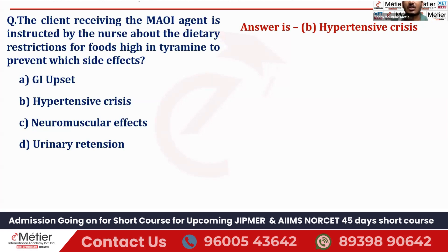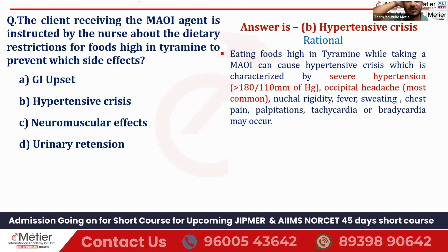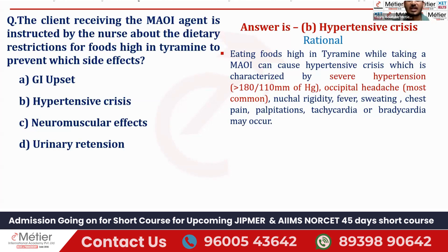The same thing is mentioned in the rationale. Eating food high in tyramine while taking MAOI can cause hypertensive crisis, which is characterized by severe hypertension — more than 180/110 mmHg. Apart from that, occipital headache — severe headache in the back of the head — is the most common sign. Apart from that, nuchal rigidity, fever, sweating, chest pain, palpitation, tachycardia, or sometimes bradycardia can happen. The correct answer is option B, that is hypertensive crisis.